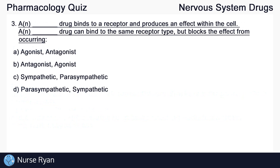Question number three: a blank drug binds to a receptor and produces an effect within the cell. A blank drug can bind to the same receptor type but blocks the effect from occurring.